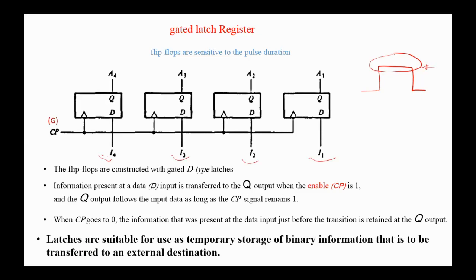In this circuit diagram, information present at the DATA-D input is transferred to the Q output when the enable signal is 1, and the Q output follows the input data as long as the clock pulse or enable signal remains 1. Latches are suitable for use as temporary storage of binary information that is to be transferred to an external destination.